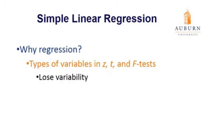Because regression is closely related to correlational tests, the reasons for doing a regression are very similar. With our Z, T, and F tests, we lose variability for individuals. With regression, we want to retain individual differences in our analyses. We know that people differ, and how they differ best represents the overall population, so we want to retain that variability.